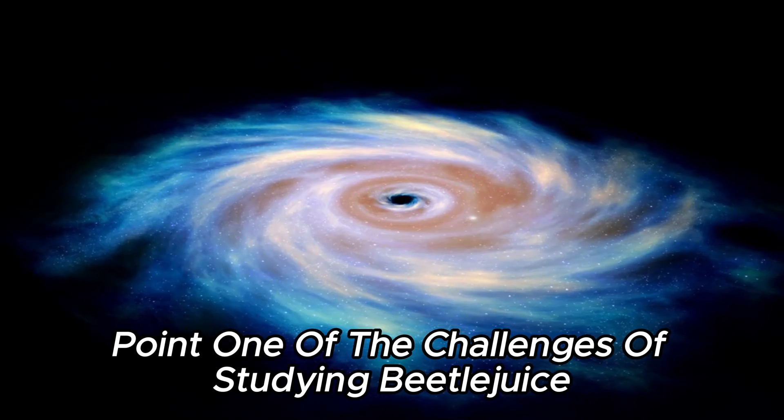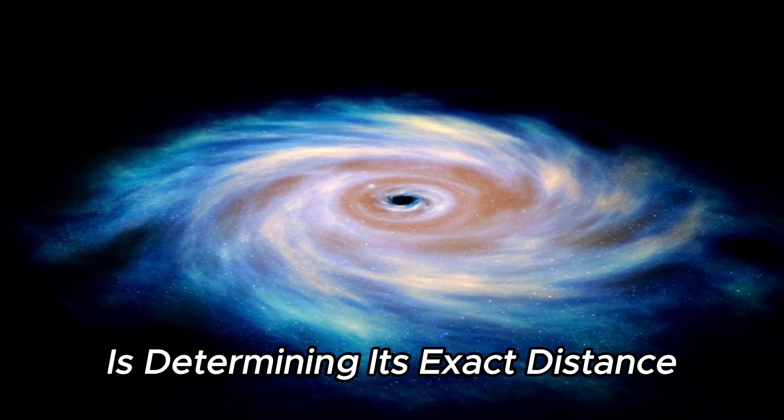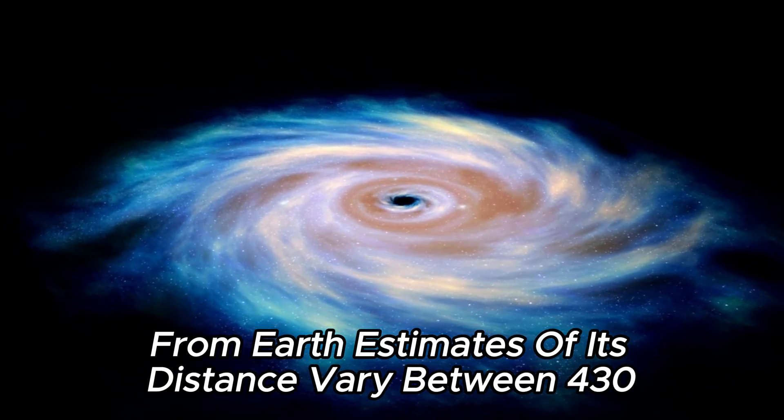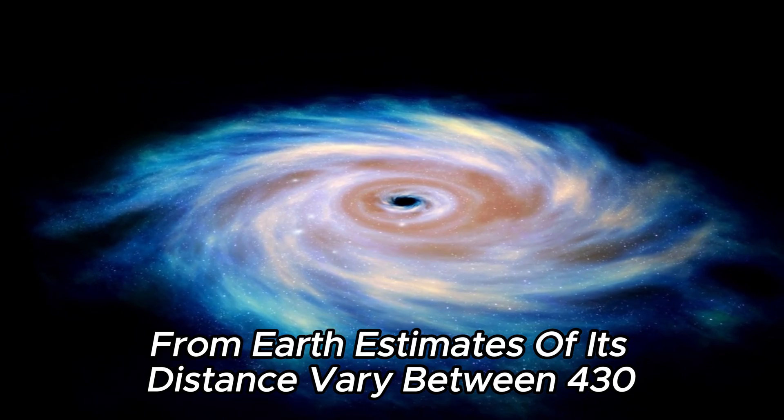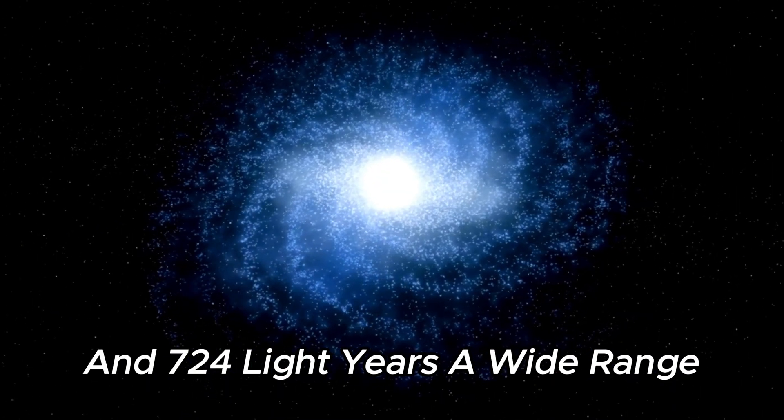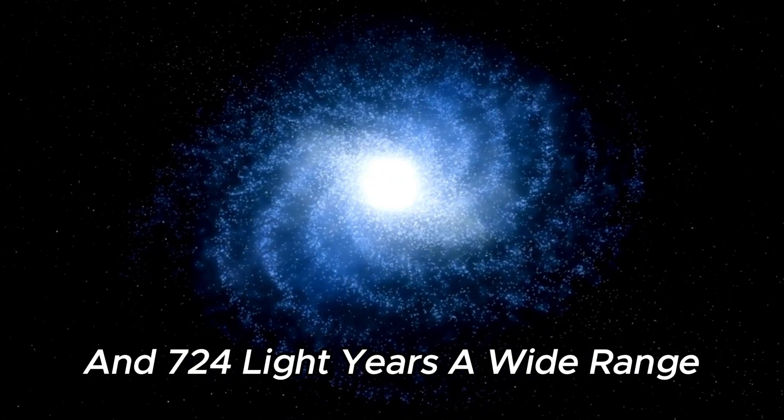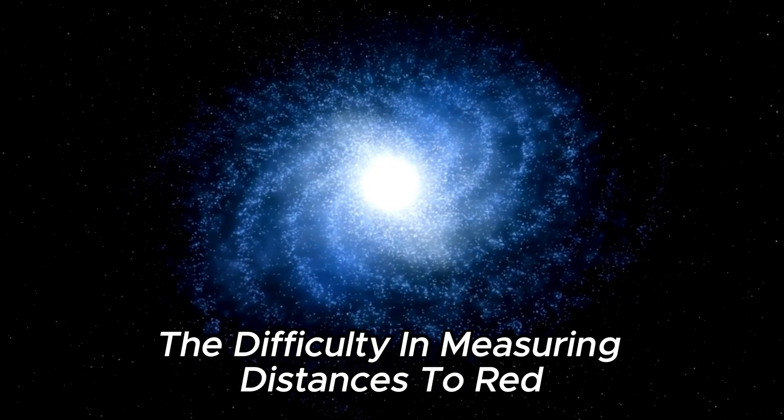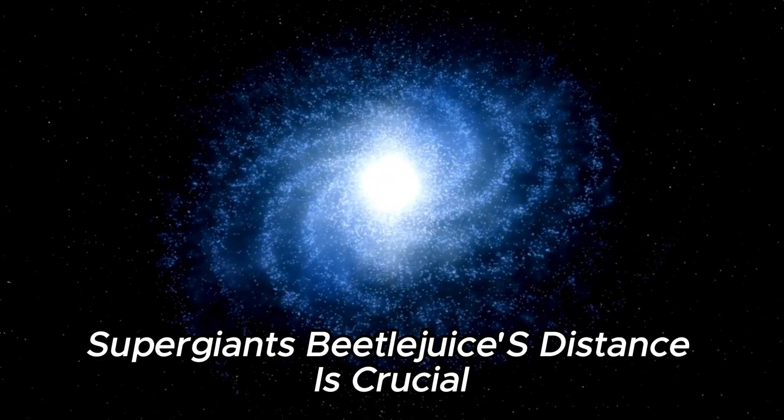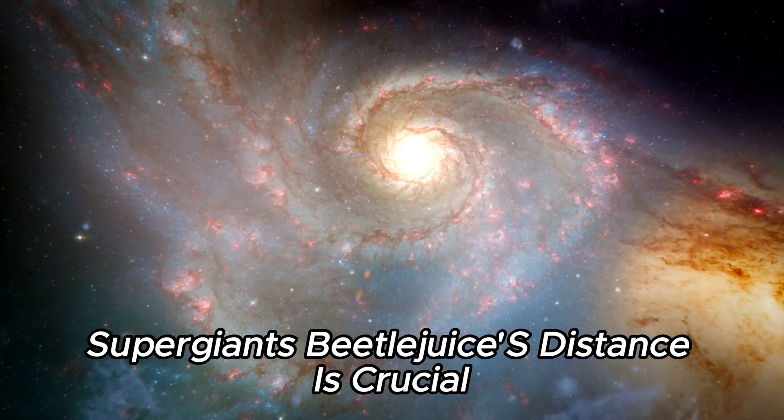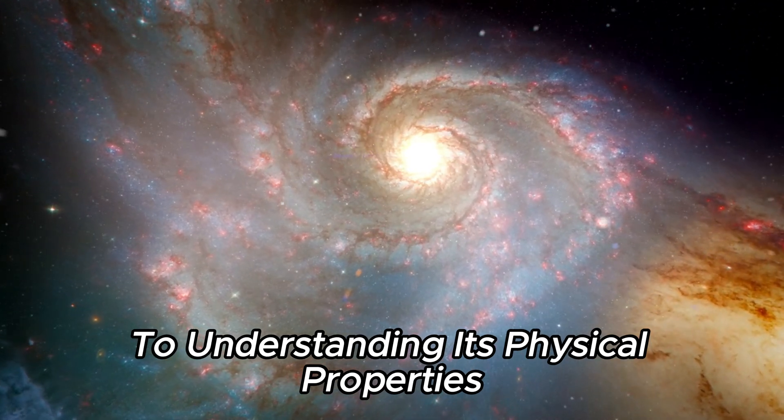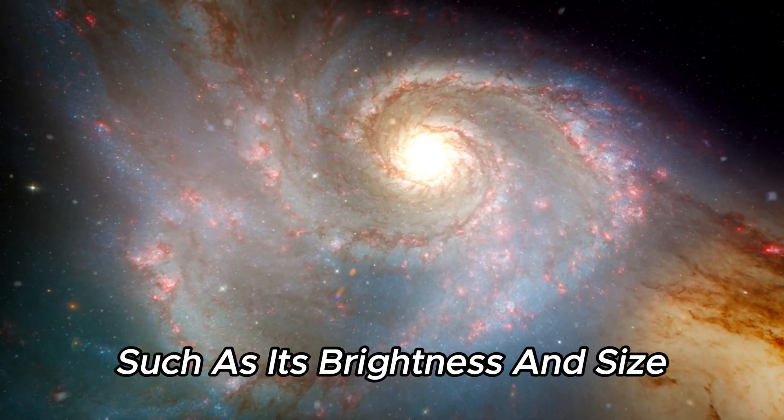One of the challenges of studying Betelgeuse is determining its exact distance from Earth. Estimates of its distance vary between 430 and 724 light-years, a wide range that reflects the difficulty in measuring distances to red supergiants. Betelgeuse's distance is crucial to understanding its physical properties, such as its brightness and size.